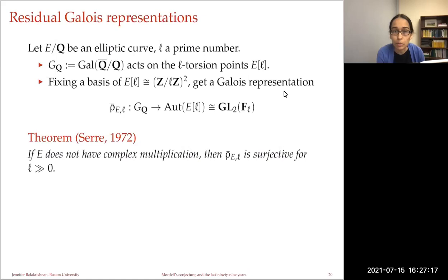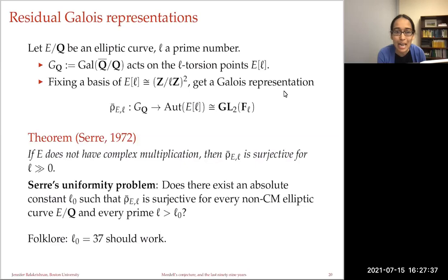Serre proved in 1972 that if E does not have complex multiplication, then rho-bar_{E,l} is surjective for l sufficiently large. It's tempting to ask about uniformity. Serre asked whether there is an absolute constant l₀ such that rho-bar_{E,l} is surjective for every non-CM elliptic curve E over Q and every prime l greater than l₀. The folk conjecture is that 37 should do the trick.